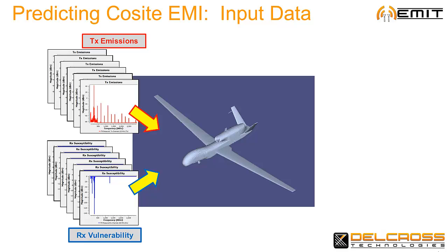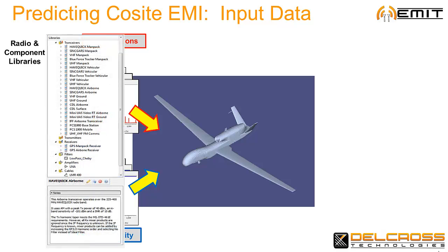And if you don't have a model for your radio, don't worry. We provide generic parametric transmitter, receiver, and transceiver models, as well as an EMIT RF systems library containing nearly 50 standard radio models.